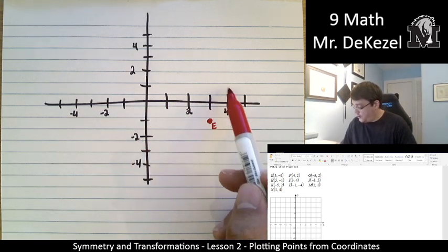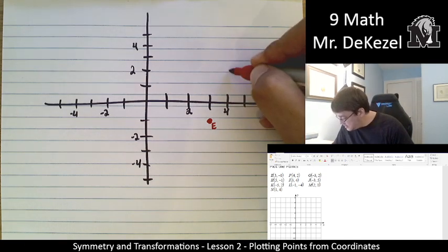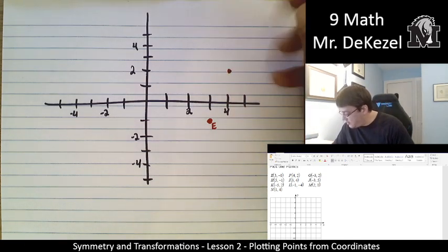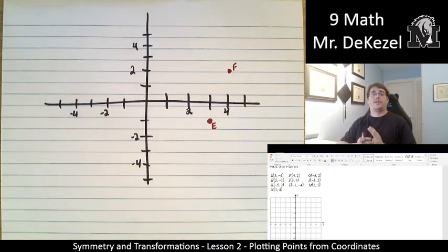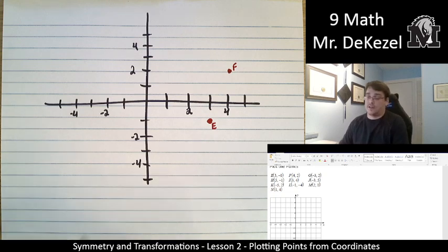1, 2, 3, 4. 1, 2. That is about there. And we're going to label that point F. So I always do left to right first, and then up and down. The x value first, and then the y value.